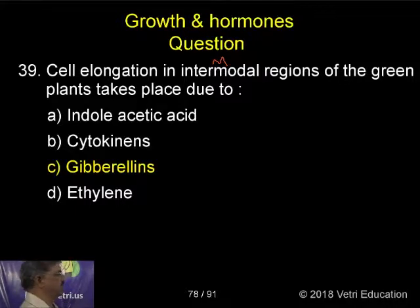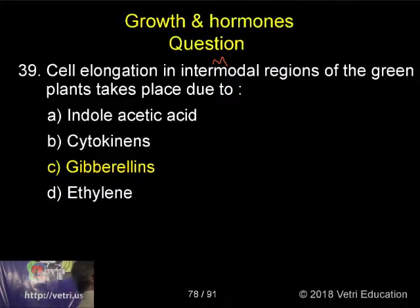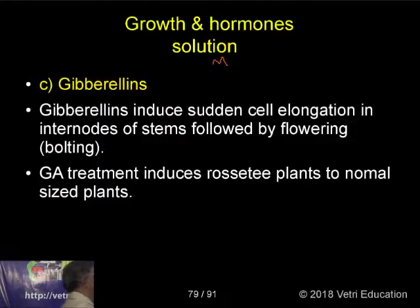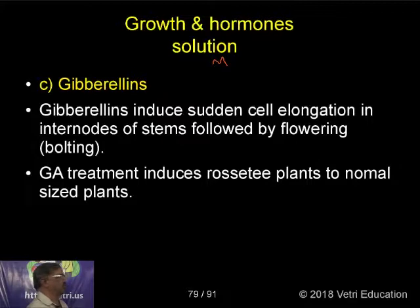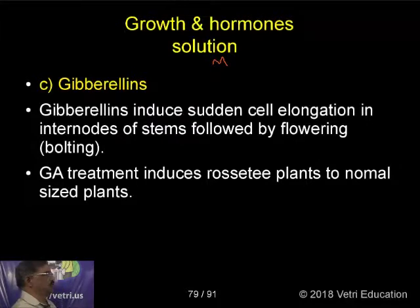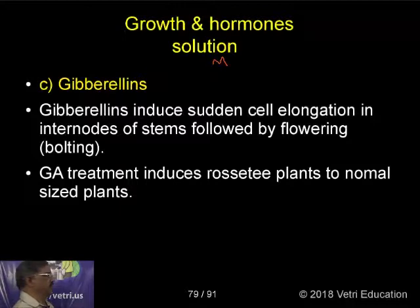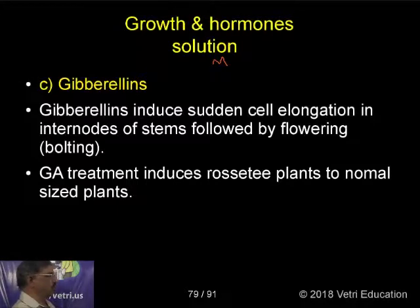The correct answer is c) gibberellins. Gibberellins induce sudden cell elongation in internodes of stems followed by flowering, which is called bolting. Gibberellins treatment induces prospective plants to normal sized plants.